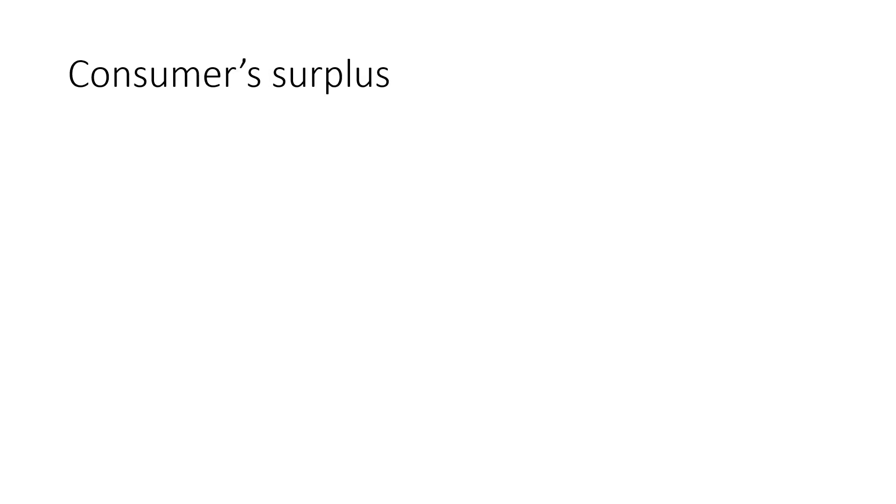Consider again the demand curve for good 1. Let's say that p1 is this value in between the second and third reservation price. She will then consume two units of good 1. Her gross benefit from the first unit is r1. This is how she values one unit of this good. However, she only pays p1 for each unit. The rest, r1 minus p1, is pure benefits for her.